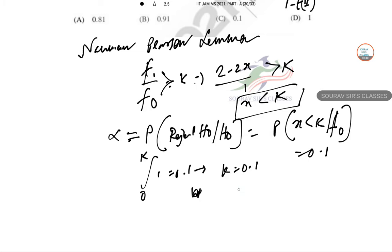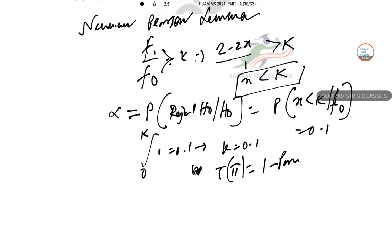Type 2 error equals 1 minus power of the test. Now the power of the test can be calculated in this way: probability of rejecting H0 given H1 is true, so probability of x less than 0.1 given F1.